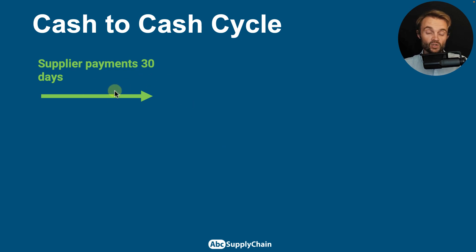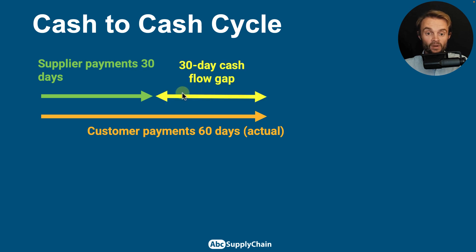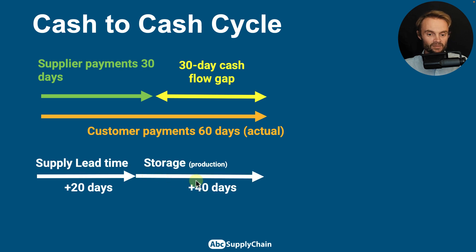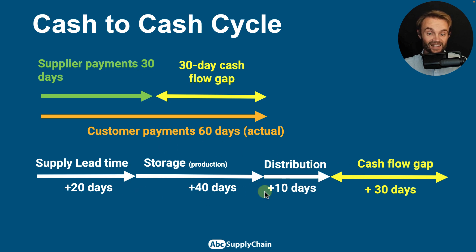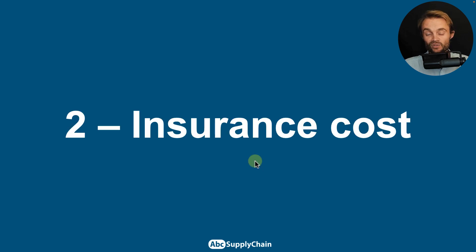For example, let's say you have to pay your suppliers within 30 days but your customers only pay you within 60 days — that's a gap of 30 days you need to finance. On top of that, you have all the inventory moving through your supply chain: storage, production, and distribution. At the end you may need to finance a total of 100 days. That's what we call the cash-to-cash cycle.